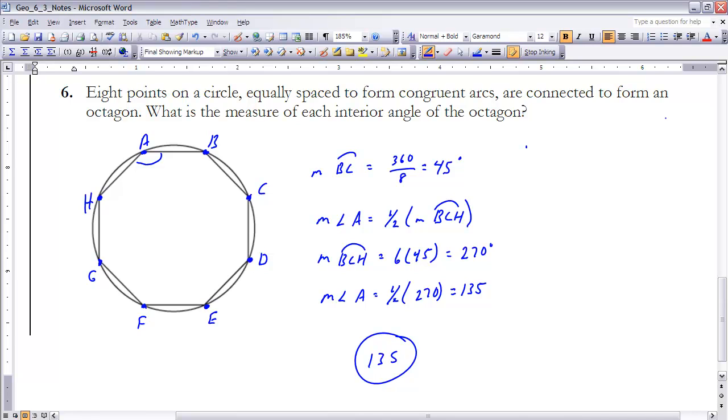I know that each one of these arcs would be equal to 360 degrees divided by 8, because we said that these points were evenly distributed around the circle. Therefore, each one of these arcs would be 45 degrees. Now, if each one of them is 45 degrees, to find the arc B all the way around to H, I'm going to take 45 times 6, which is equal to 270 degrees. Therefore, the measure of that angle, angle A, is one half times 270, which is 135. Therefore, the measure of any one of these angles in here would be 135 degrees.